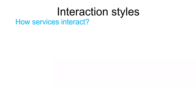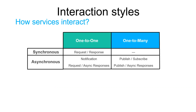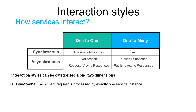When selecting an IPC mechanism for a service, it is useful to think first about how services interact. All the possible interaction styles can be categorized along two dimensions. The first dimension emphasizes the number of services involved: one-to-one or one-to-many interaction. The second dimension focuses on the nature of the interaction — whether it is synchronous or asynchronous. The one-to-one type means a client request is processed by exactly one service instance.